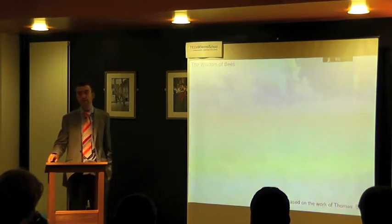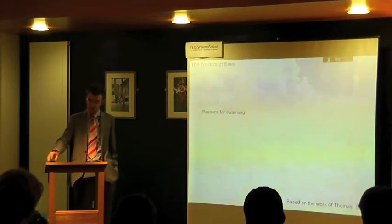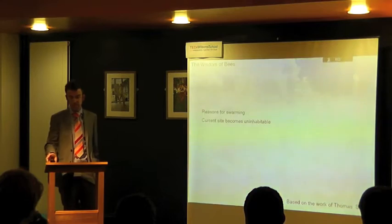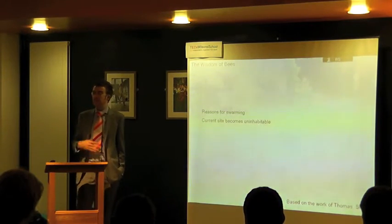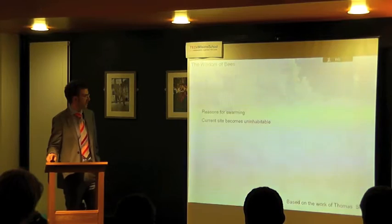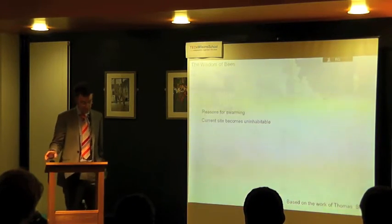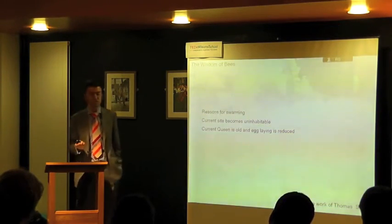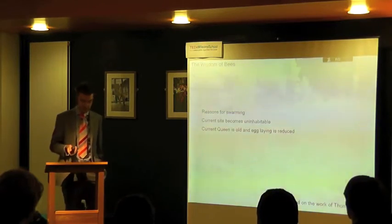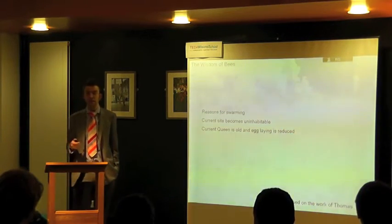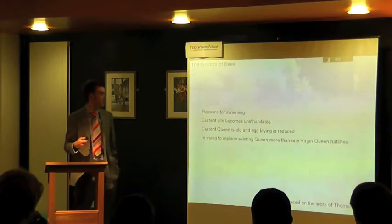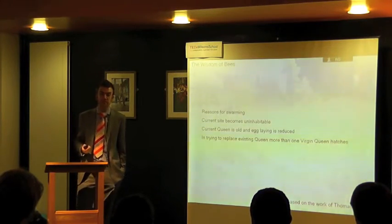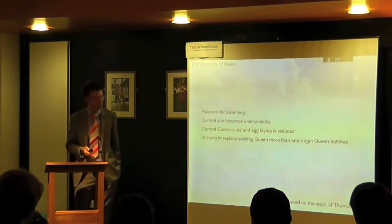There are many reasons why a colony will swarm. The least common actually is when their current site becomes uninhabitable — sadly because swarming requires a number of days to get ready, the bees often die in that case. Other reasons: the current queen is old and her egg laying has reduced, so they want to rejuvenate with a new queen. They don't kill the old queen; she gets a chance to start a new colony before her death. And when making queen cells, they might end up with too many, giving the opportunity for a swarm.